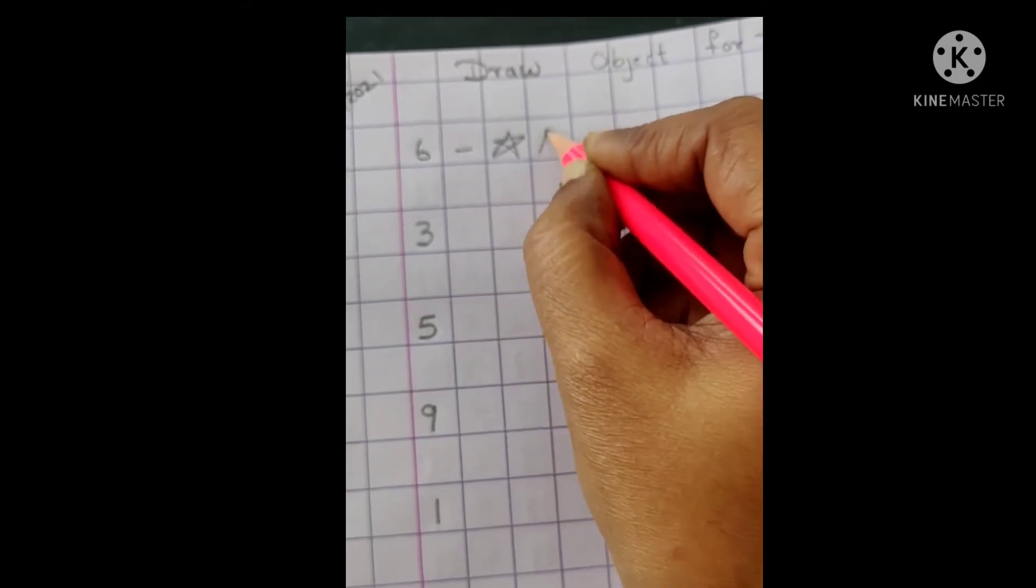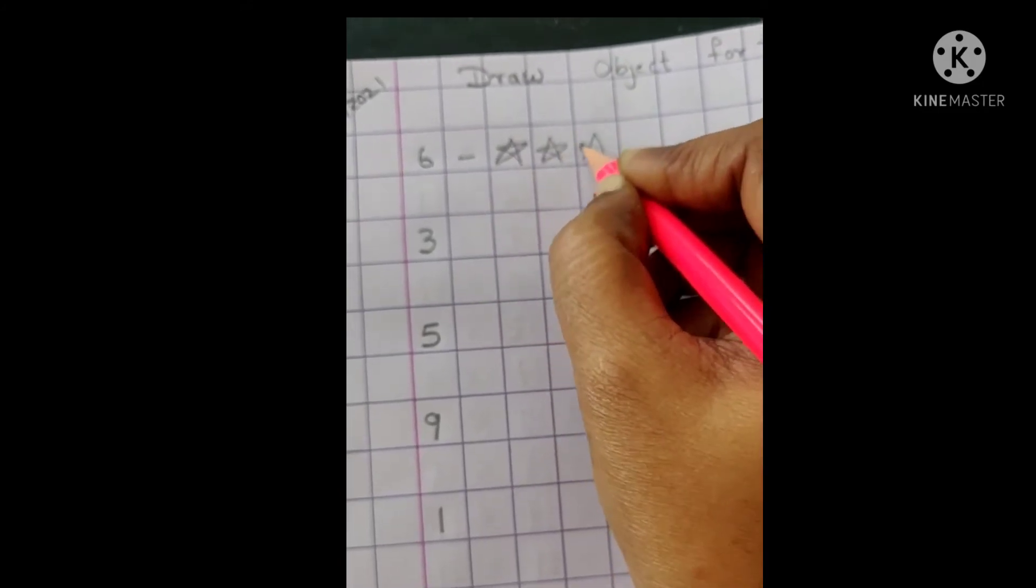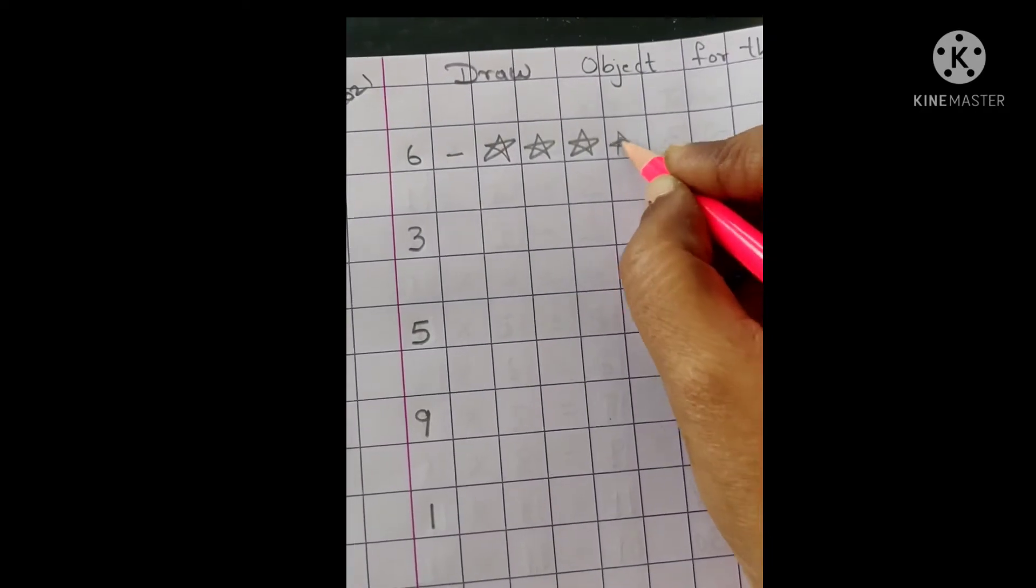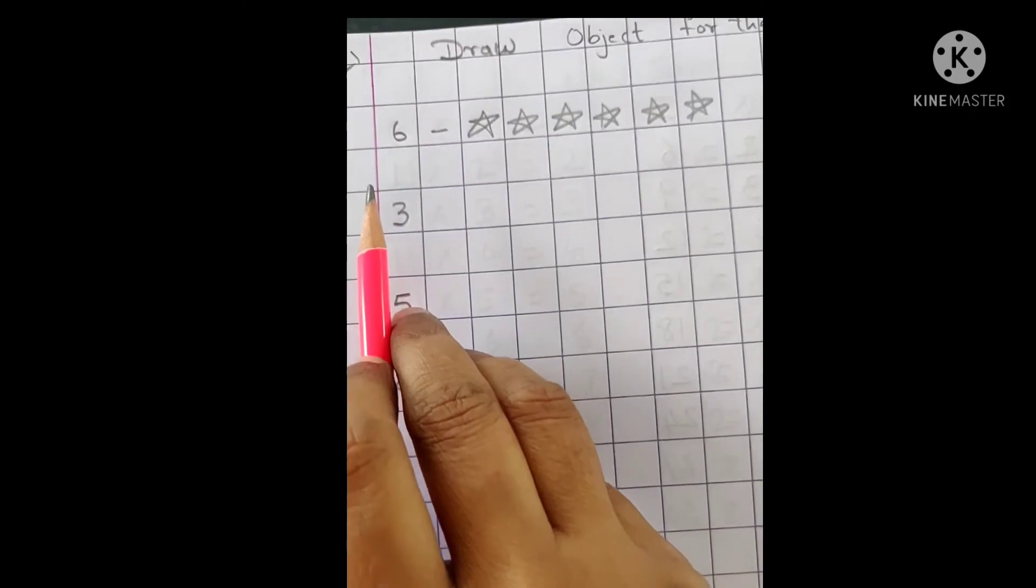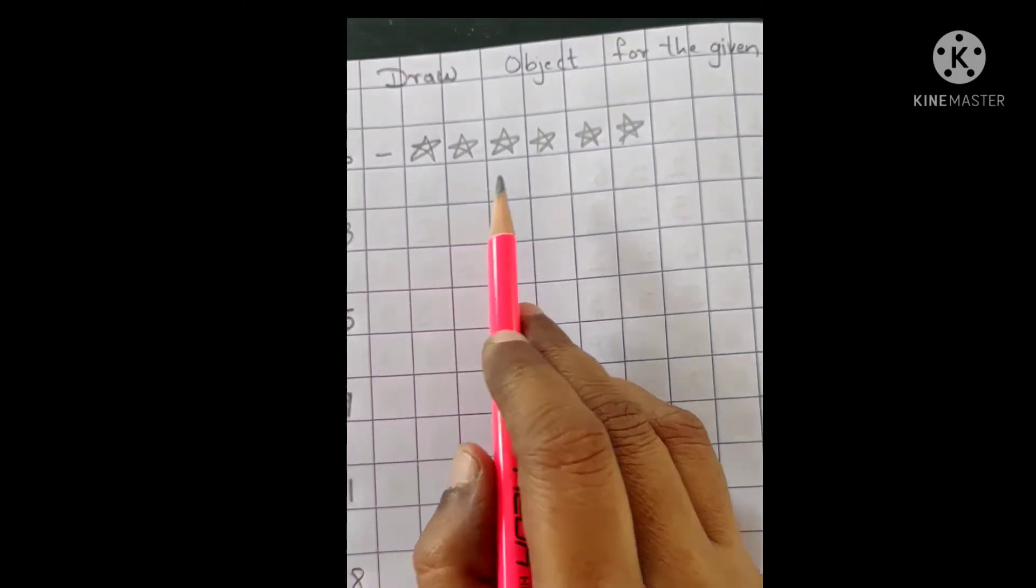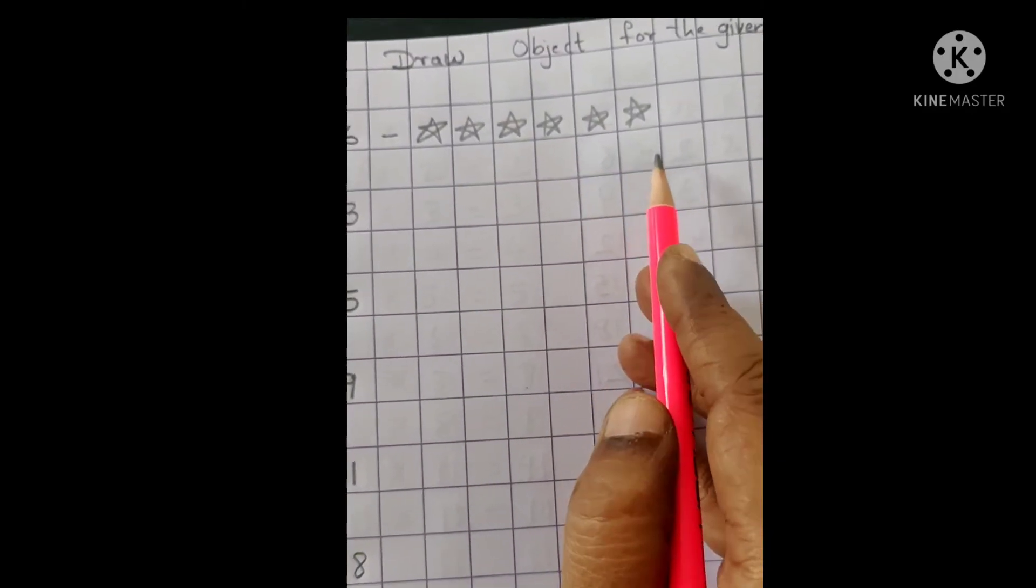1, 2, 3, 4, 5, 6. So here is number 6 and I have drew 6 stars. Yes?